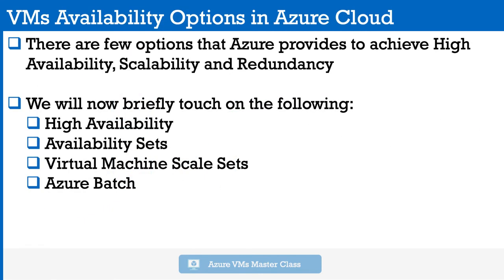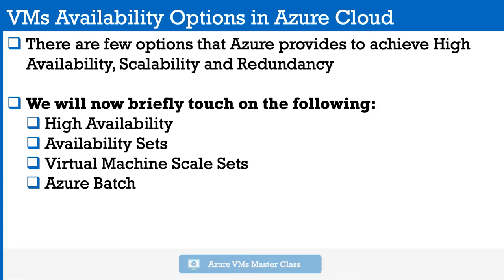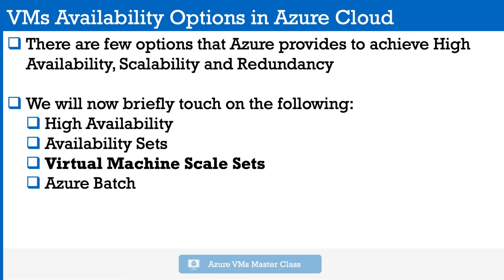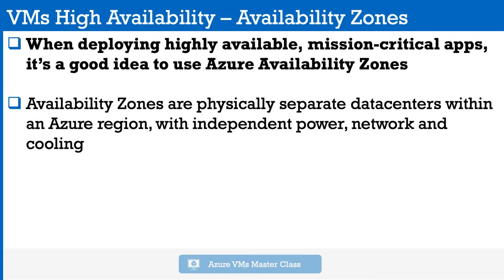Let's touch on the availability options in Azure Cloud. Azure provides a few options to achieve high availability, scalability, and redundancy. We will talk about availability zones, availability sets, virtual machine scale sets, and Azure Batch. Availability zones were covered in Module 2 when deploying highly available mission-critical applications — it's a good idea to use Azure availability zones.